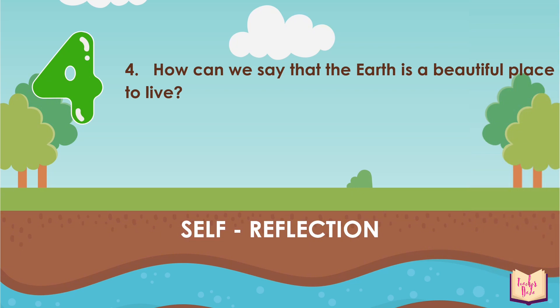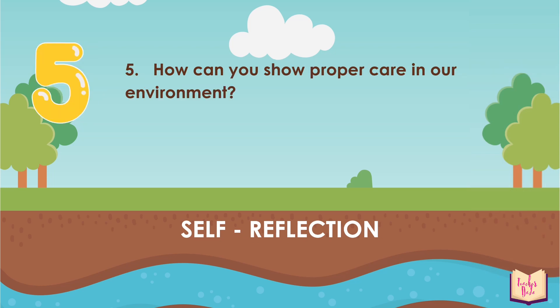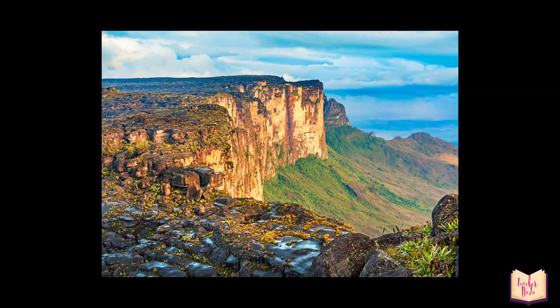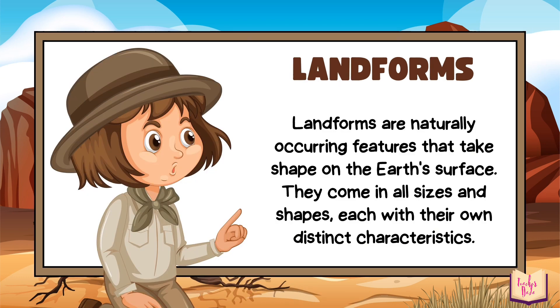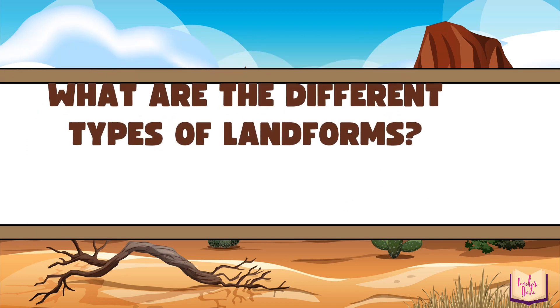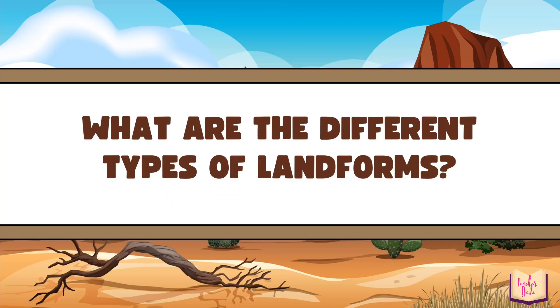How can we say that the Earth is a beautiful place to live? How can we show proper care in our environment? Have you seen different landforms and water forms? They are among the natural formations on Earth. Let's go! Let us learn the Earth's landforms. Landforms are naturally occurring features that take shape on the Earth's surface. They come in all sizes and shapes, each with their own distinct characteristics.